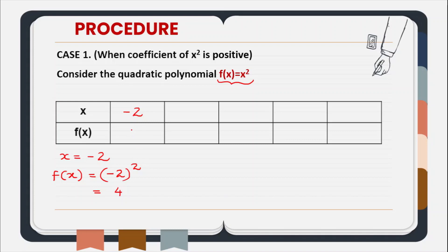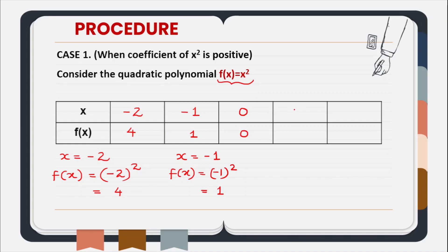So likewise, aap solution table find ker sakte hain. I hope you all know how to plot a simple linear equation on graph, so likewise quadratic polynomial ko bhi graph me plot ker sakte hain. Similarly, when x is equal to minus 1, the value of f(x) will be minus 1 raised to the power 2, that is positive 1. When x is equal to 0, the value will be 0, and when x is equal to 1, value of f(x) will be 1, and when x is equal to 2, the value of f(x) will be square of 2, that is 4.